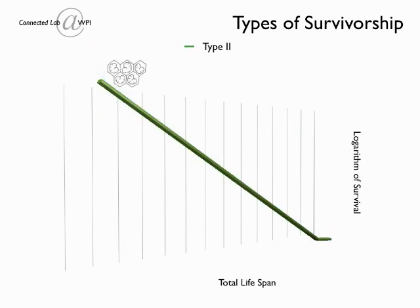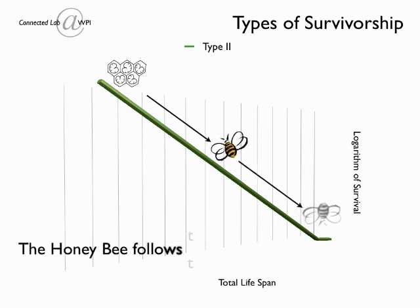Type 2 survivorship curves are linear and illustrate species with relatively constant mortality rates. Many reptilian species, coral, and the honey bee follow this trend.